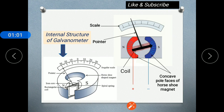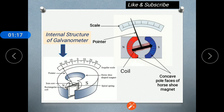When the current passes through the coil, the coil will get deflected. This happens because the current passing through the coil, placed in an external magnetic field, produces a torque, and due to this torque the coil deflects. This deflection is proportional to the current passing through the circuit.